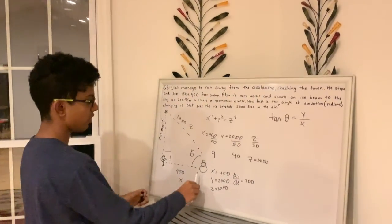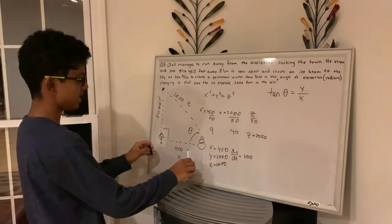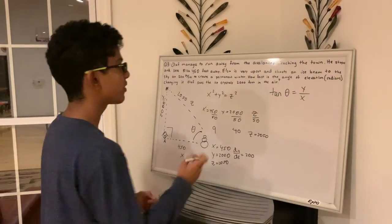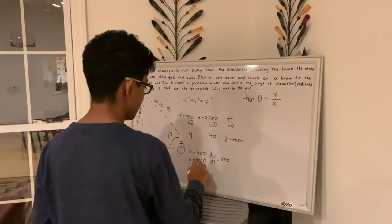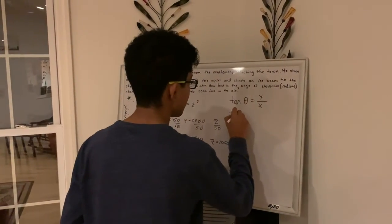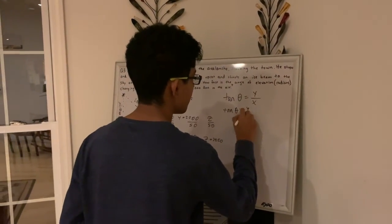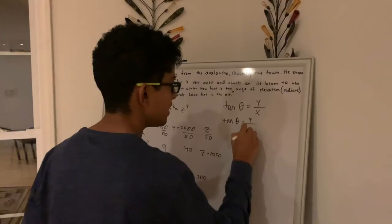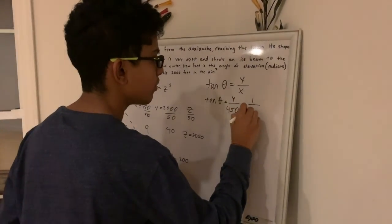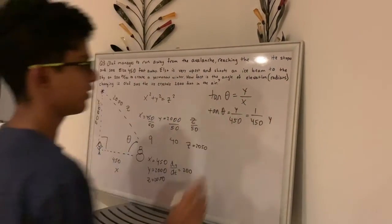And x keeps same. So Olaf stays in the same place, Elsa stays in the same place. So we plug in x into here. So tan theta equals y over 450, which simplifies to 1 over 450 y. So now we need to find the derivative, because it's asking for how fast the angle of elevation is changing.